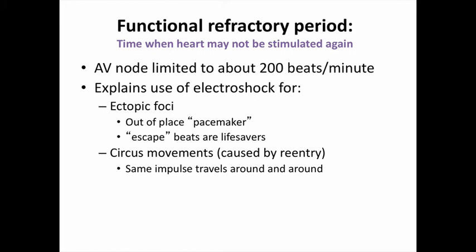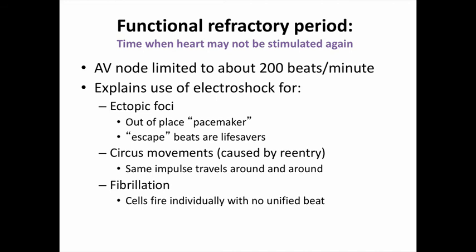There is another dysrhythmia called a re-entry abnormality, sometimes called a circus movement. Electroshock is sometimes used for re-entry abnormalities because the heart kind of gets stuck in a loop. The use of electroshock is again to cancel out all electrical activity and hope that the heart picks back up again the way it's supposed to — with the SA node, AV node, and down the line.